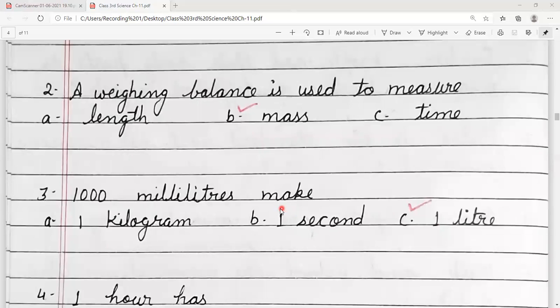Number 3, 1000 milliliter make. 1000 milliliter jo hote hain, woh kya banate hain? One liter.